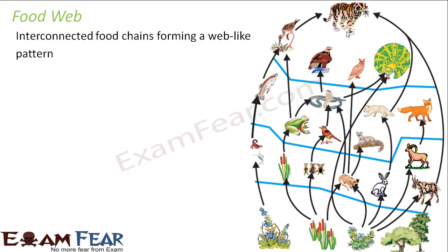Similarly, when you think of a rabbit, there are so many other animals which can feed on a rabbit. When you talk of the goat, there are so many other animals which can feed on the goat — a tiger can feed on a goat, a lion can feed on a goat. So there are many animals which can eat up a particular animal, and that is how food chains get connected and form a web-like structure known as a food web.